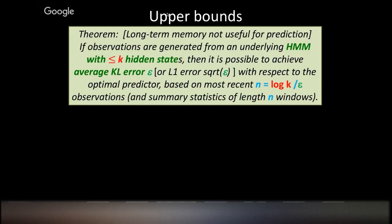Here's the result about hidden Markov models: long-term memory is not necessary for predictions. If observations are generated from a hidden Markov model with at most k states, then there is an algorithm which achieves average KL error epsilon, where average is the average over all time steps. This algorithm only uses the most recent log(k/epsilon) observations and some summary statistics of the sequence so far.